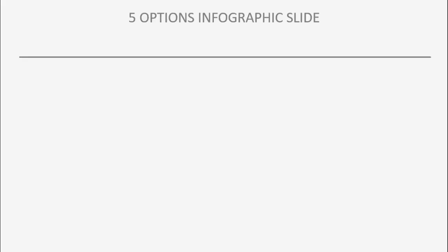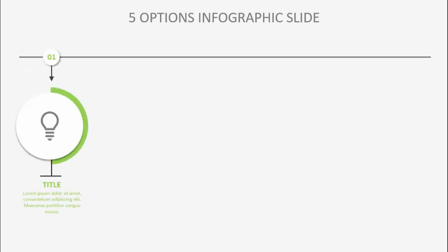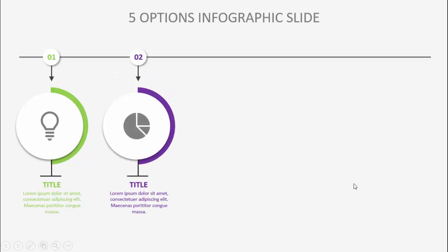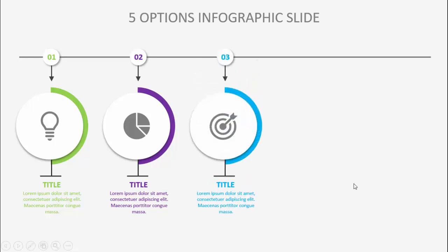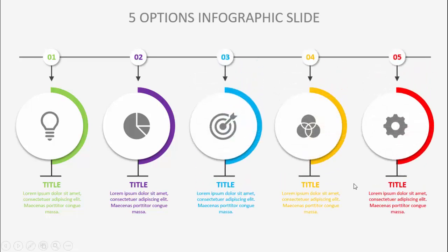In today's tutorial I'm going to show you how to create a five-options infographics slide in PowerPoint. When I click, you can see it will show option number one — you can put the option number, add an icon, and there's a title and detail text at the bottom. When I click it will show the second option, the third, fourth, and fifth. You can increase or decrease these options depending on your requirement.